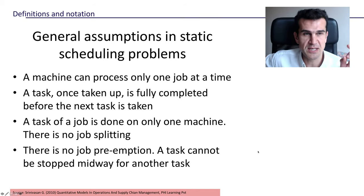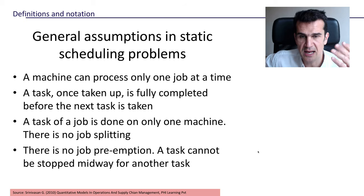A machine, any machine, can process only one job at a time. They can only undertake one task at a time, and once a machine has taken up a task, this task has to be fully completed before the next task is taken.